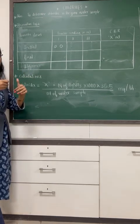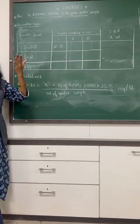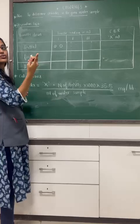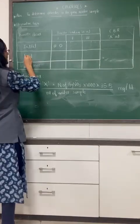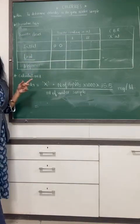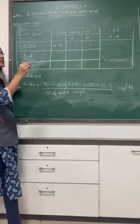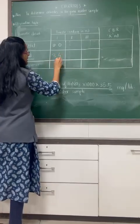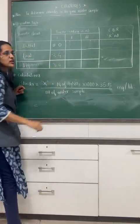When you titrated that water sample with the AgNO3, it turns to brick red. And the final for the fluoride content is 3.4. So the difference is 3.4.